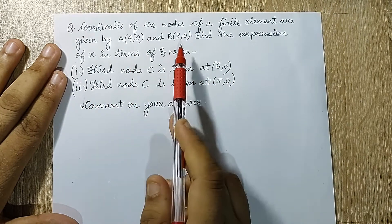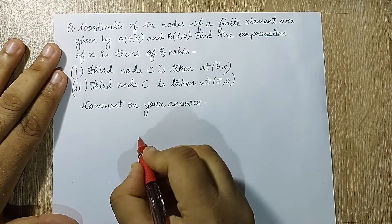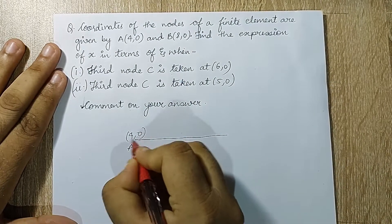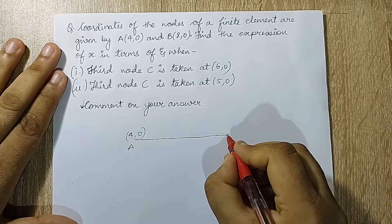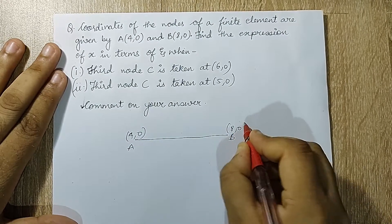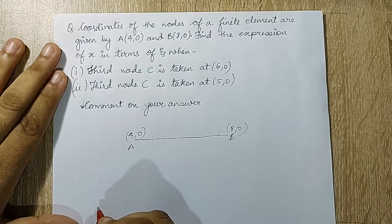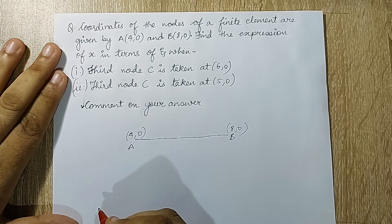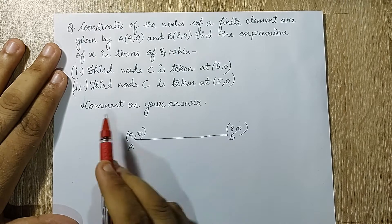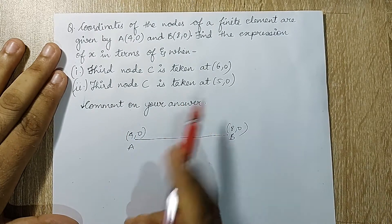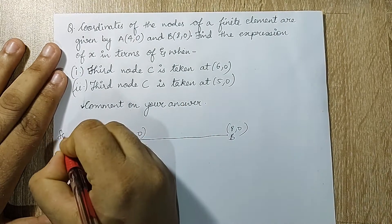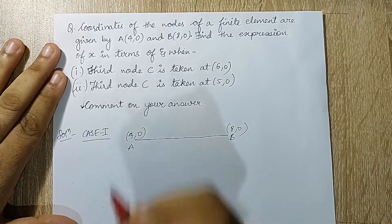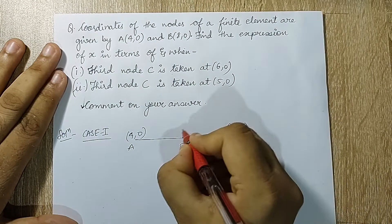by A(4,0) and B(8,0). So I have an element, one end A is 4 comma 0 and the other end B is 8 comma 0. Find the expression of x in terms of zeta when third node C is taken at (6,0), and in the second case, third node C is taken at (5,0).